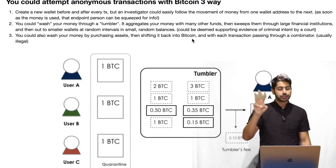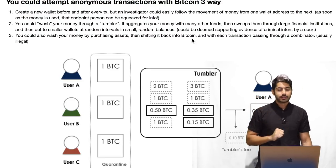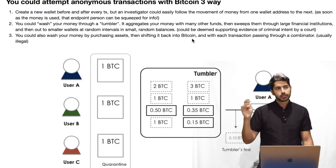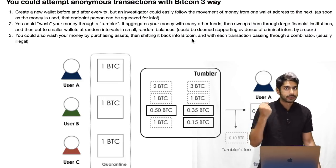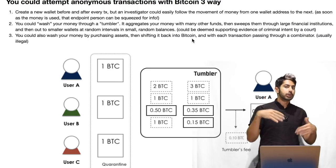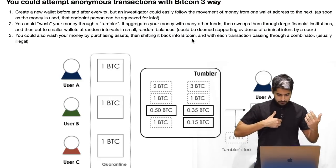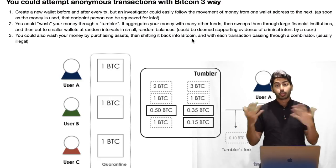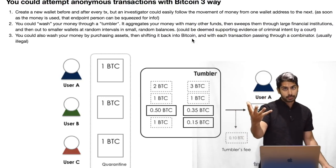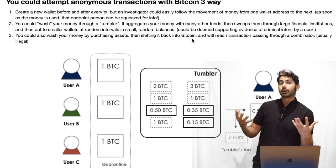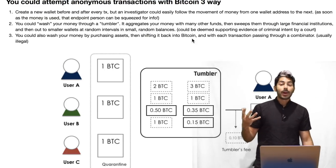There are three ways to attempt anonymous transactions. The first is to create a new wallet after every transaction — Coinbase.com does this by default. But as soon as that money is used, that endpoint person could be squeezed for information. If you send money to somebody and want to remain anonymous by creating wallets between every transaction, eventually someone is going to use that money in the real world — paying a dentist or buying a soccer ball — and that is an endpoint person that people can pressure to trace it back to you.